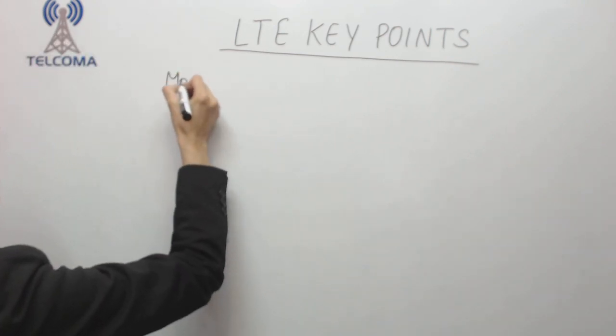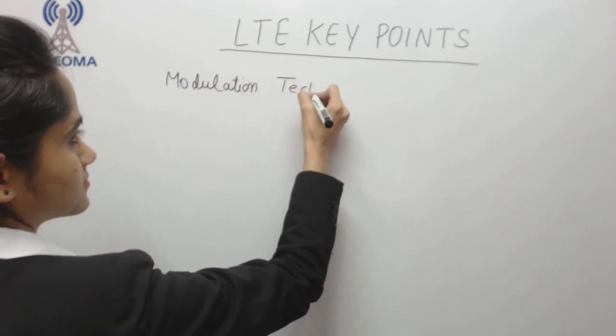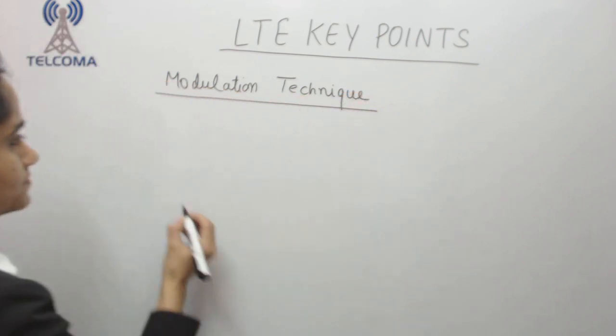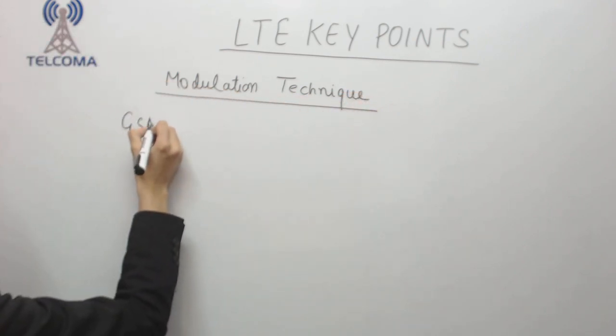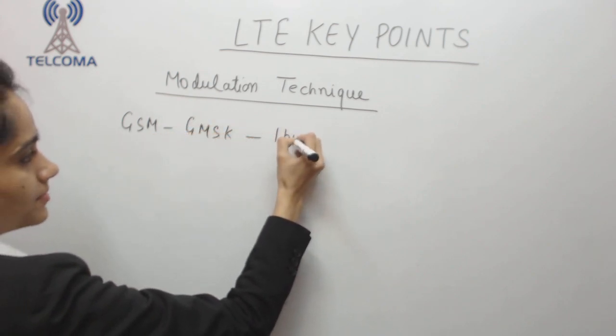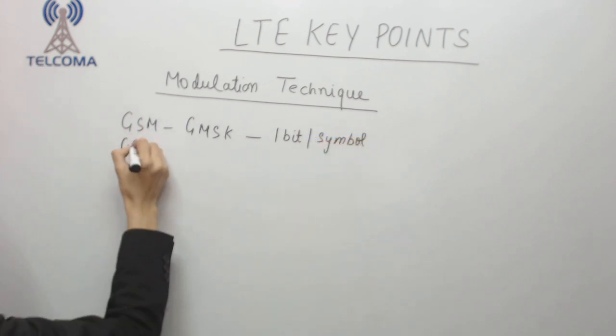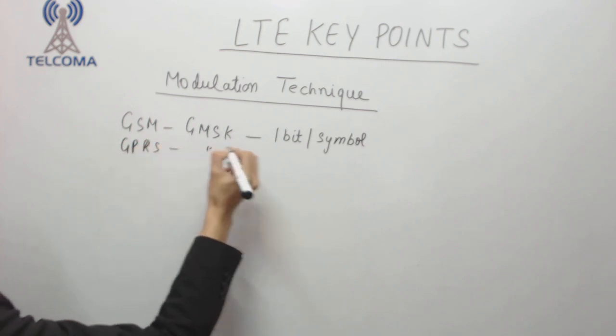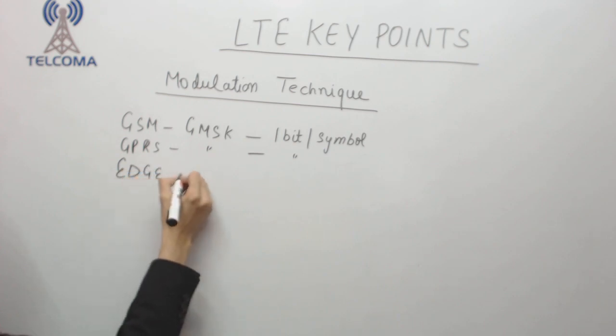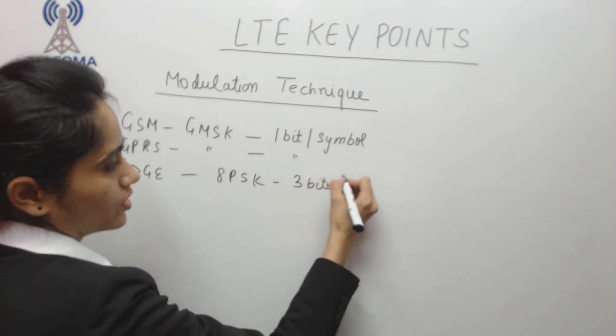Now let's discuss about the modulation technique. I will compare with the previous one like GSM is working on GMSK. Here one bit per symbol is modulated. When we move to GPRS it is also working on the same GMSK. For EDGE we have 8PSK. Here we have 3 bits modulated per symbol.